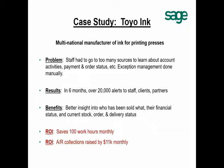Here's a quick case study: Toyo Inc, a multinational manufacturer of ink for printing presses. Two results highlighted in red: Toyo Inc was able to save over 100 staff work hours per month by automating processes like invoicing, statement distribution, and report delivery. They also focused on getting past-due clients to pay more promptly, and were able to automate their collections process to the point where they raised their AR collections by an average of roughly $11,000 per month.